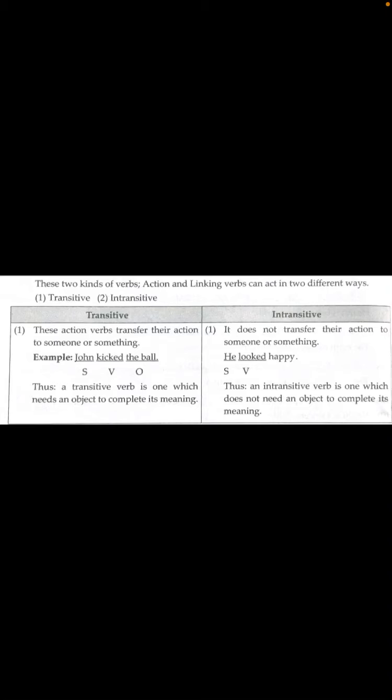Transitive action verbs transfer their action to someone or something. For example: 'John kicked the ball.' Here, 'John' is the subject, 'kicked' is the verb, and 'the ball' is the object. Thus, a transitive verb is one which needs an object to complete its meaning. Transitive verbs transfer their action to someone or something, following the pattern: subject + verb + object.